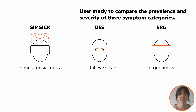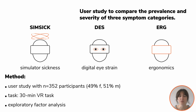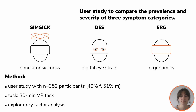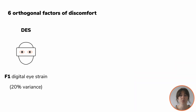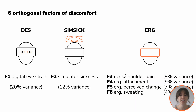Therefore, in a second step, we conducted a user study to compare the prevalence and severity of these three symptom categories. We asked more than 300 participants to fill out three symptom questionnaires after a 30-minute VR experience, and then analyzed the symptoms using an exploratory factor analysis. We found six orthogonal factors of discomfort in VR HMDs, with one being digital eye strain, one simulator sickness, and four addressing specific aspects of ergonomic symptoms.